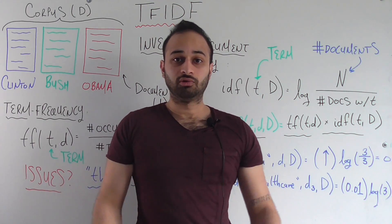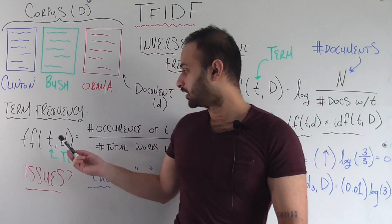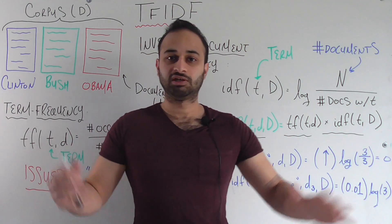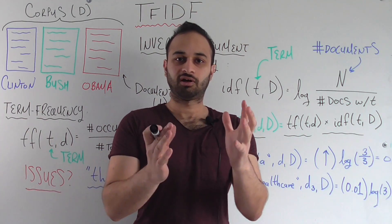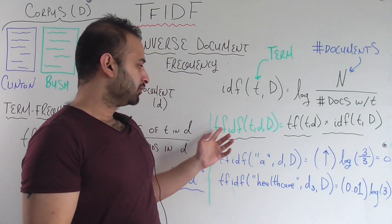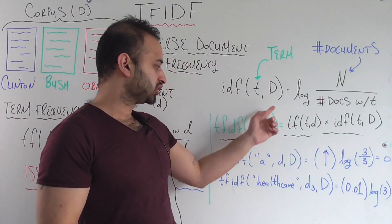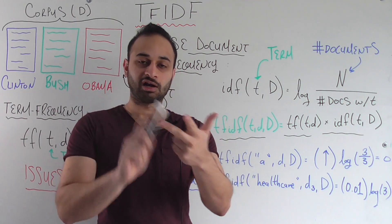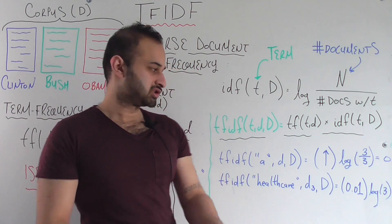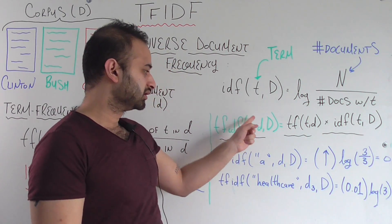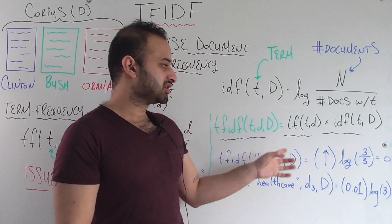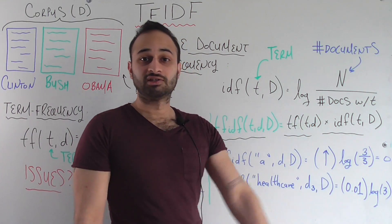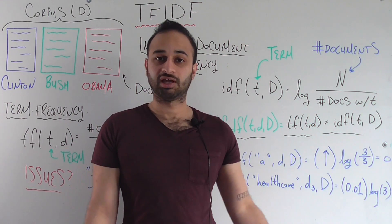Now all we do is take this term frequency, take this inverse document frequency, put them together, and we get TF-IDF — which is a function of a term t, a given document (little d), and the entire corpus (big D). It's simply equal to the term frequency times the inverse document frequency.